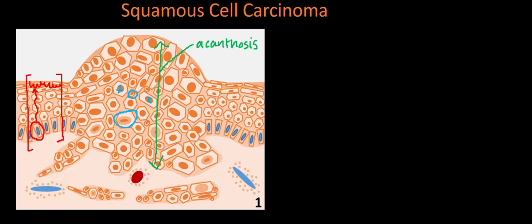Relative to the normal span of epidermis highlighted, there is clear hyperplasia or acanthosis in the center of the image. The hyperplasia occurring in the uppermost part of the epidermis, mostly in the stratum corneum, is also given a special name: hyperkeratosis — a fancy way of saying there's hyperplasia of the keratin-filled cells at the top.